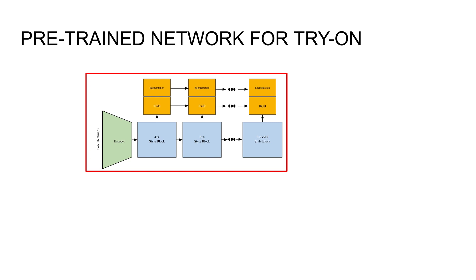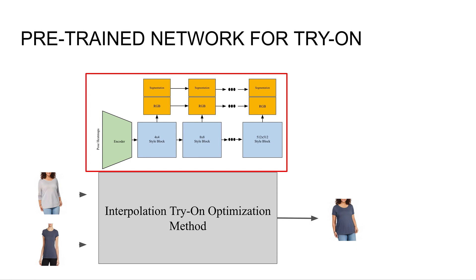So once we have our pre-trained network, we can freeze the weights and build an optimization on top of it for tryon. This optimization will take in latent representations of the person and the garment, and output a tryon image.